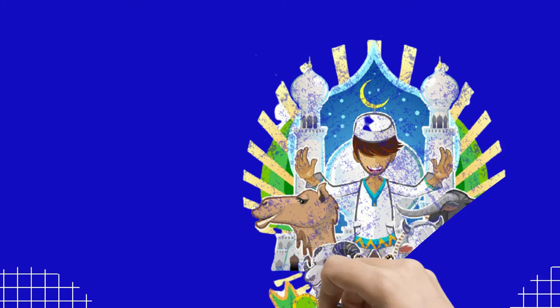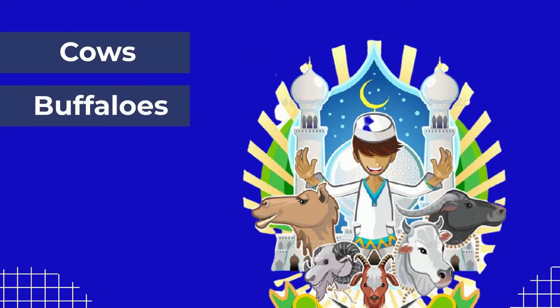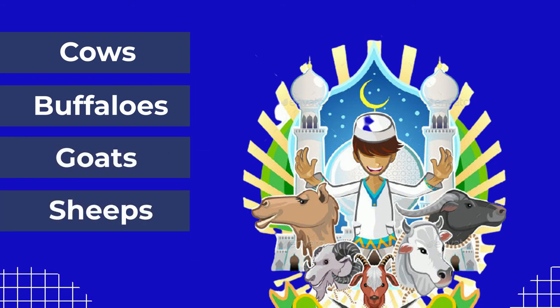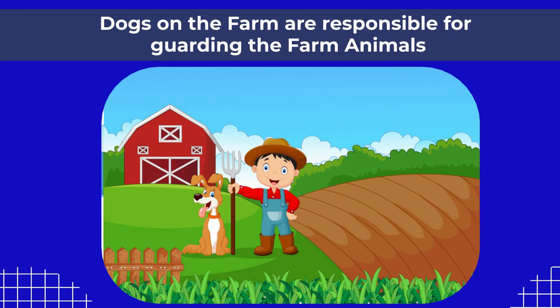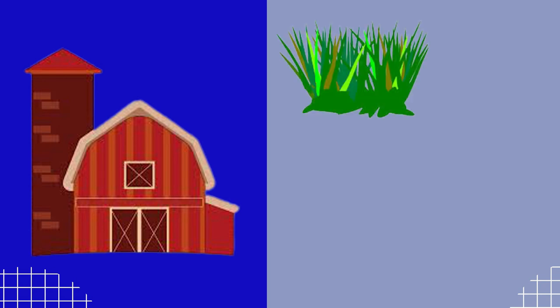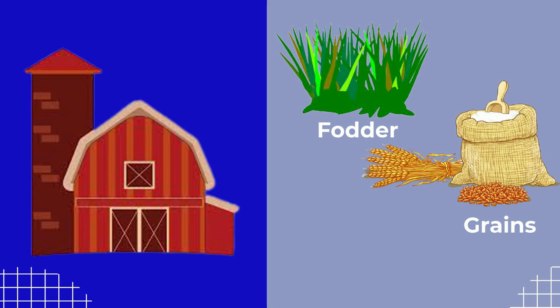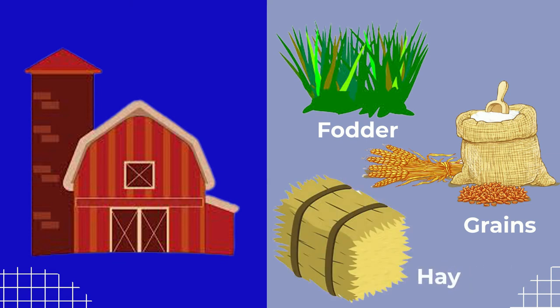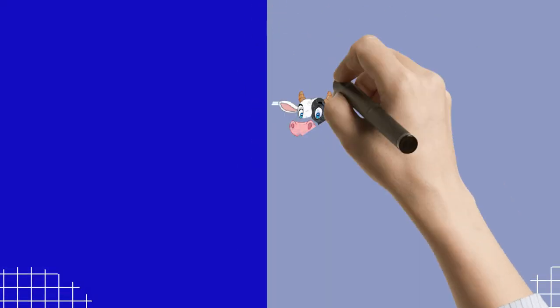In Muslim countries, cows, buffaloes, goats, and sheep are also farmed in large quantities as sacrificial animals for the annual event of Eid al-Adha. Dogs on the farm are responsible for guarding the farm animals. These animals are often kept in large wooden buildings called barns, along with stalks of animal fodder, grains, hay, etc.